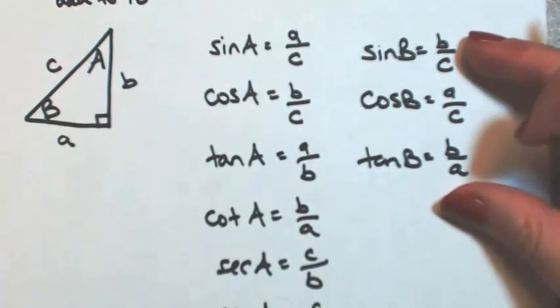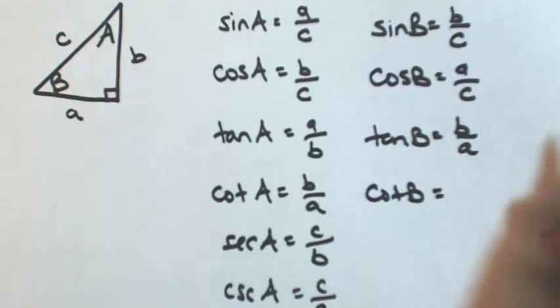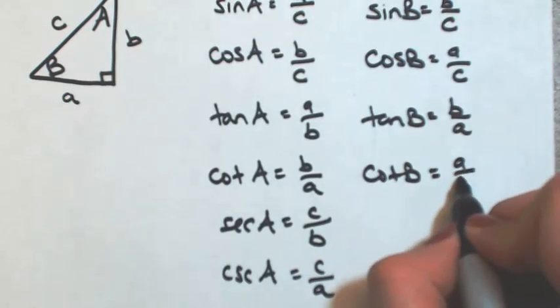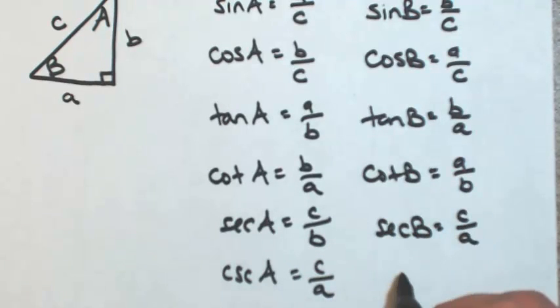And once you know those three, just take the reciprocals for the next three. So cotangent of angle B, A over B. Secant of angle B would be C over A, and then cosecant of angle B, C over B.